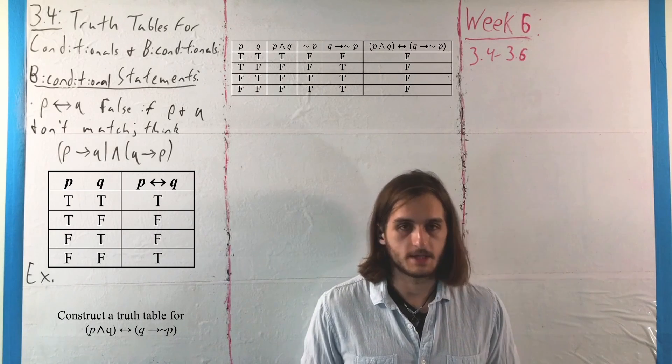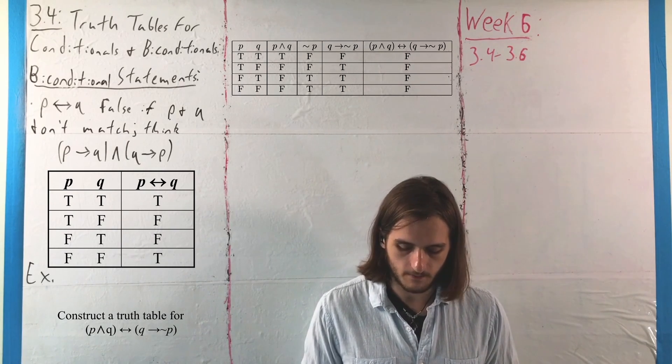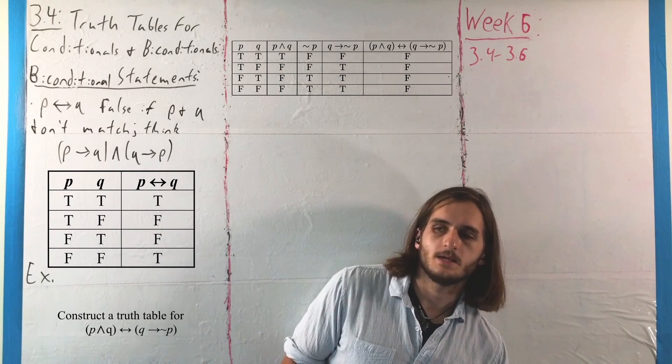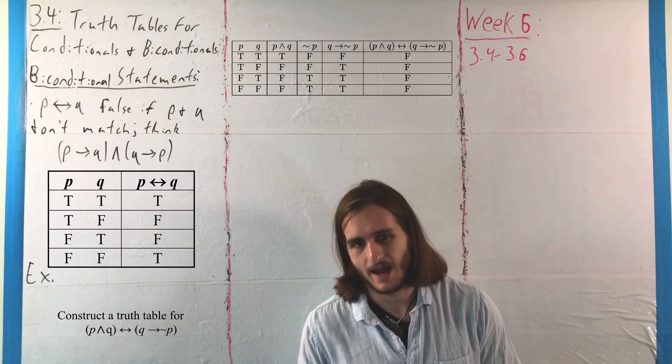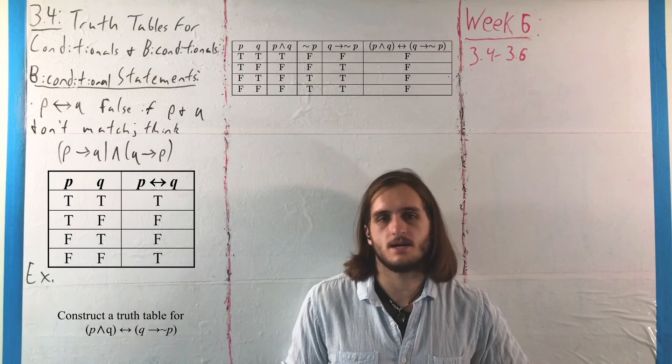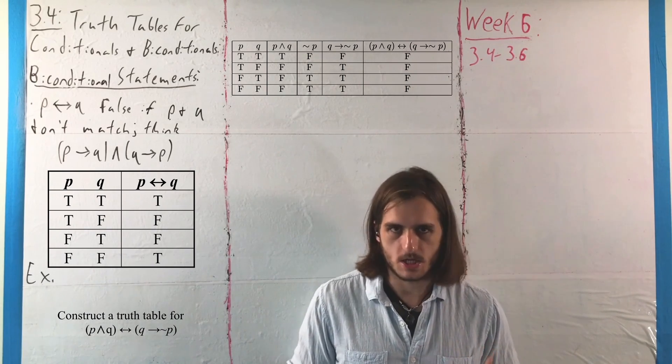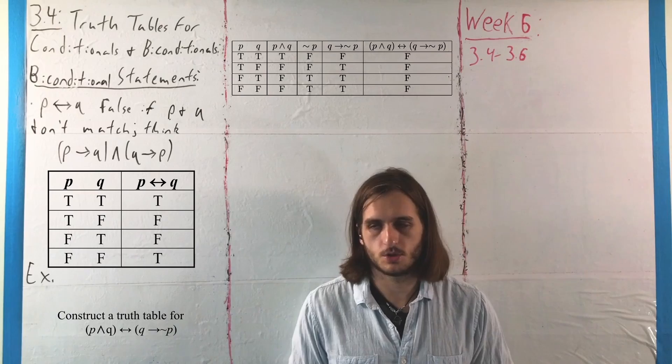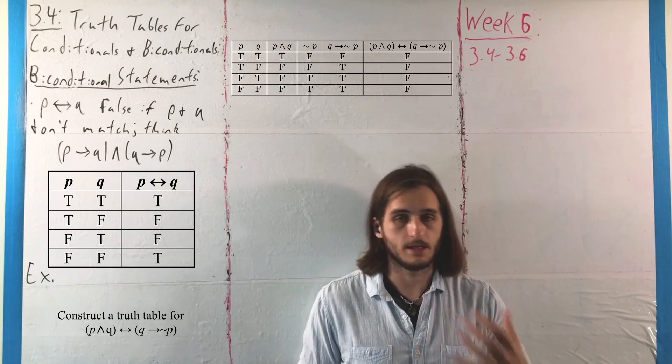Meanwhile, for the second half of that bi-conditional, we have q implies not p, which means that p kind of can't happen if q does. Not exactly, but in a sense, it's very close to that idea. So those two parts that go into our bi-conditional are asking for completely different things.